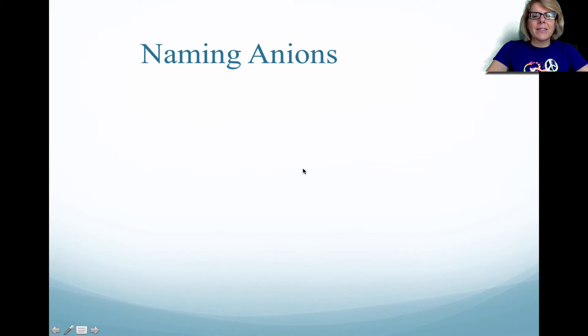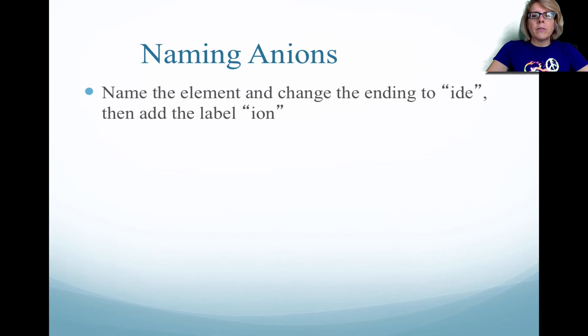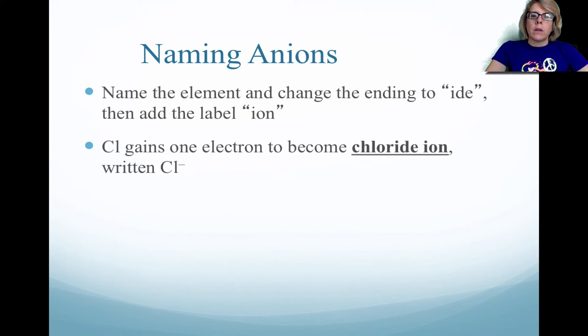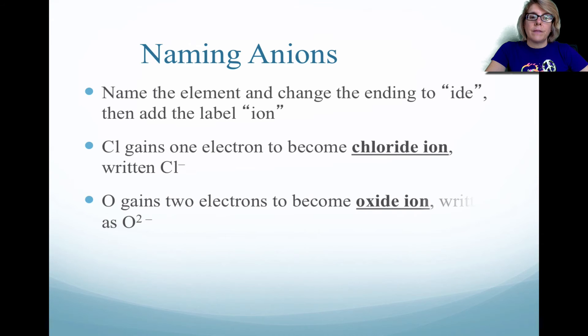Okay, so naming anions is a little bit different. You want to name the element, and this is where it gets a little confusing for students. You want to take off the ending. It's some kind of suffix, like chlorine, I-N-E. If you remove the I-N-E, it becomes I-D-E, and then you add ion to it. So chlorine becomes chloride, and it's written with a Cl minus charge. If it was oxygen, oxygen becomes oxide, and then you add a 2 minus charge to the element symbol.